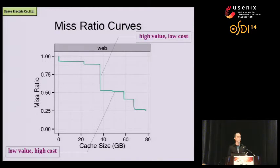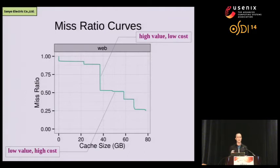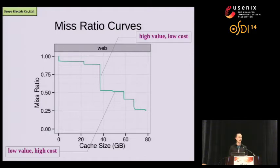From these charts you can also infer the relative cost of caching a workload. When you see a long vertical segment, that tells you that increasing your cache size just minimally to include that region will reduce your miss rate quite significantly — adding a little bit of cache gives a big bang for your buck. Conversely, when you see a long horizontal line, that tells you that you can add up to 20 gigs of cache and have very little effect on the miss rate, which would be expensive.